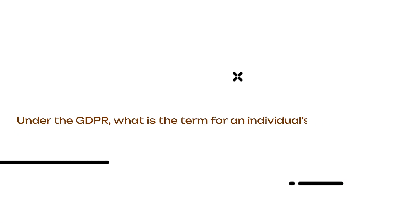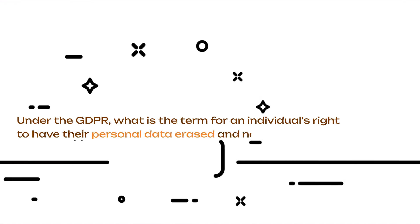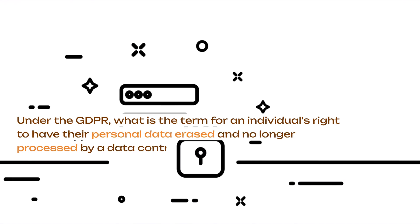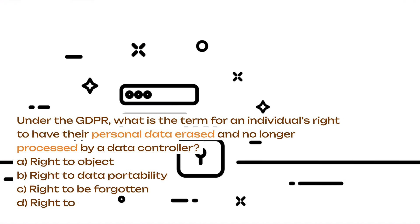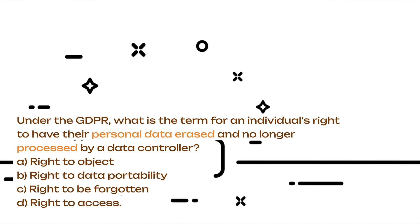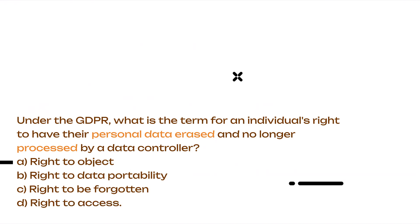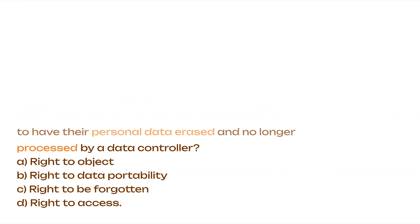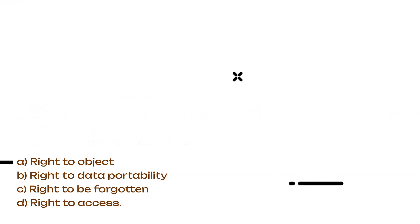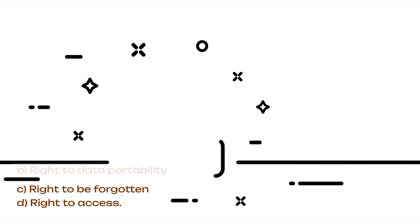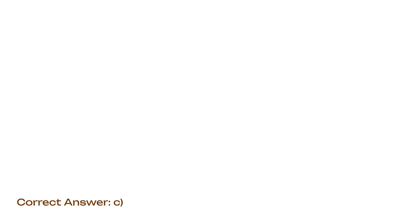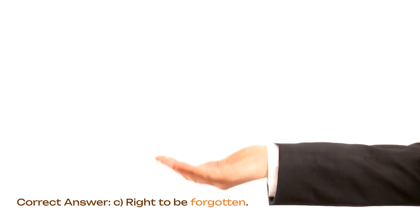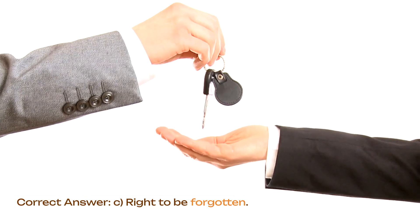Under the GDPR, what is the term for an individual's right to have their personal data erased and no longer processed by a data controller? A. Right to object. B. Right to data portability. C. Right to be forgotten. D. Right to access. Correct answer: C. Right to be forgotten.